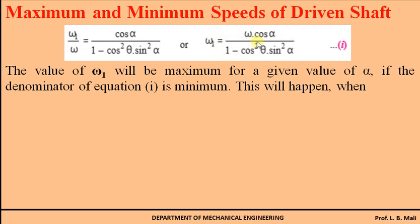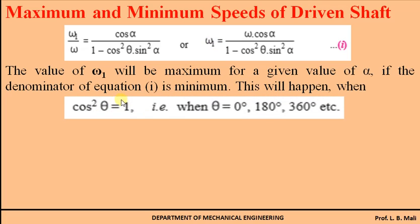The denominator is minimum when cos²θ has the maximum value, because sin²α is constant for the whole operation. So in order to find out the minimum denominator, we consider cos²θ at its maximum value. The maximum value of cos²θ is 1, and the minimum value is 0. cosθ equals 1 when θ = 0°, θ = 180°, and θ = 360°.